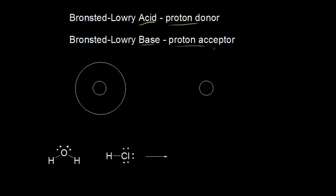Let's quickly review what this definition means by proton. Looking at this diagram, the hydrogen atom in its most common isotope has one proton in the nucleus and one electron somewhere around the nucleus. If we were to take away this electron, we would only be left with the proton in the nucleus. So when we're talking about a proton, we're talking about the nucleus of a hydrogen atom, which is equal to H+.